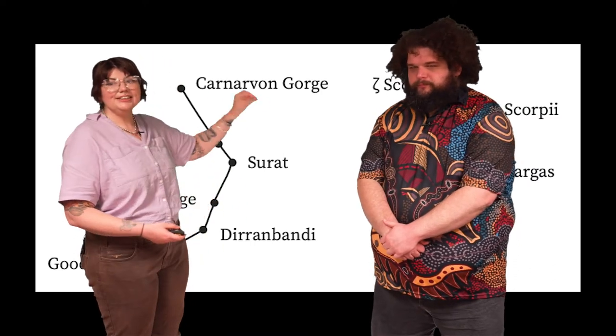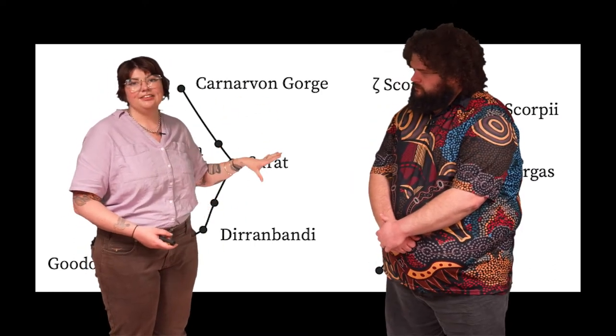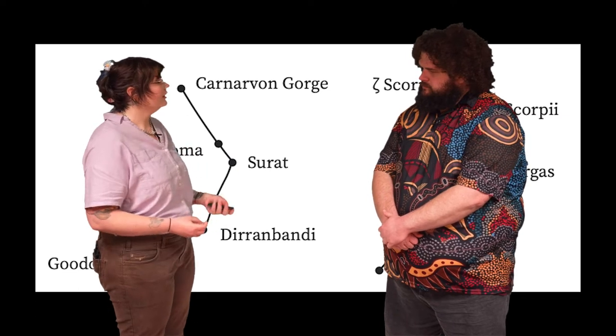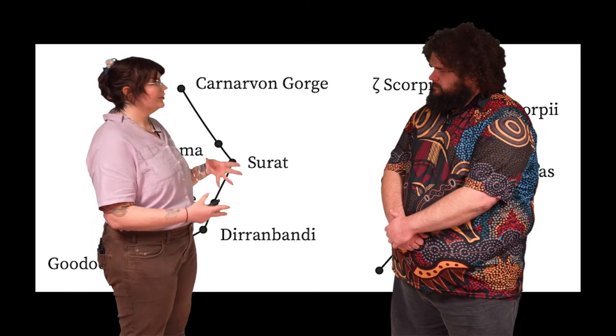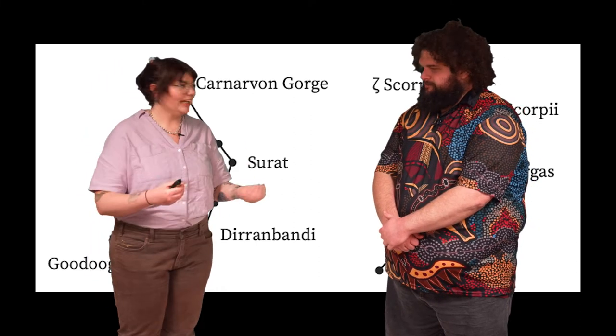Now this star map in particular talks about a 600 kilometer journey from Gaduga in New South Wales, northwest New South Wales, all the way up to Carnarvon George in Queensland.